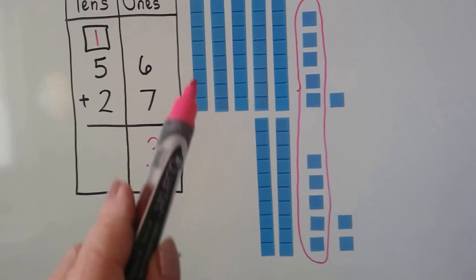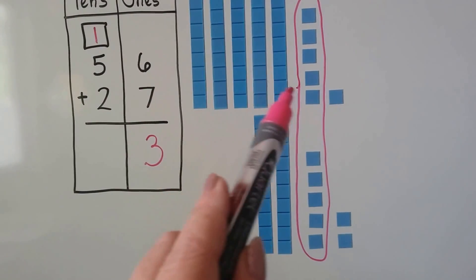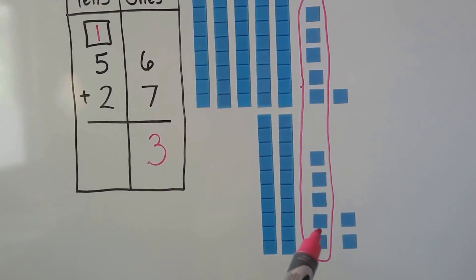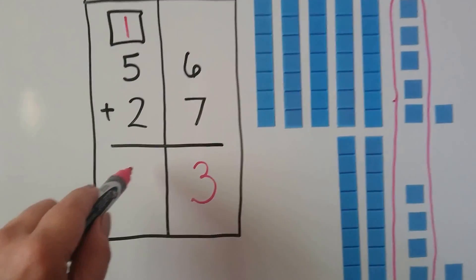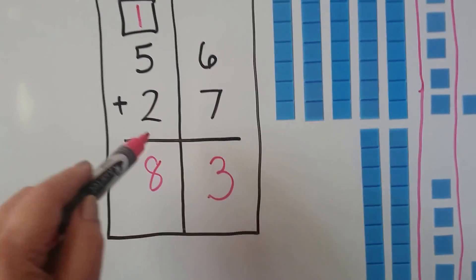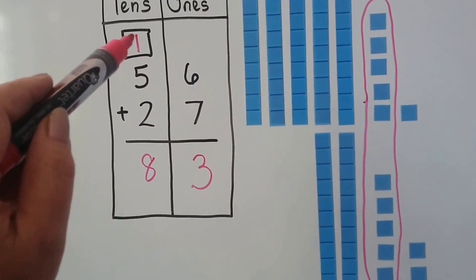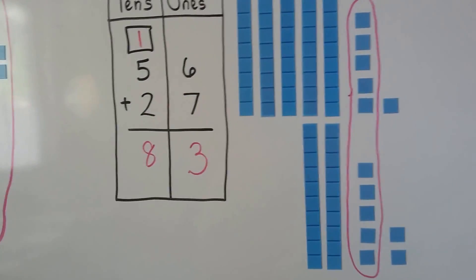How many tens do we have? 1, 2, 3, 4, 5, 6, 7, 8. And 5 and 1 is 6, 7, 8. Yeah, we did it right.